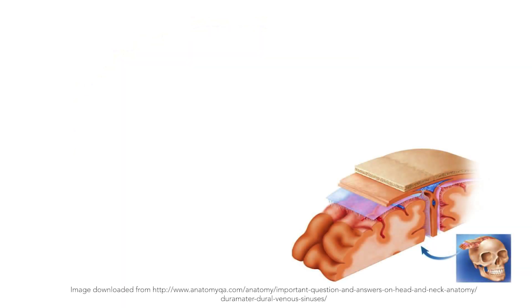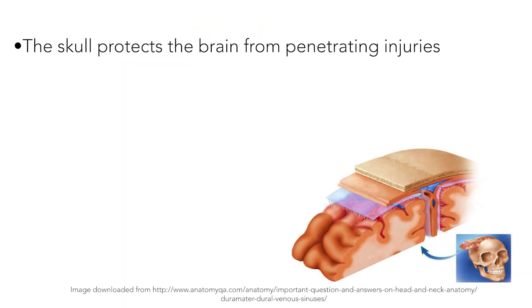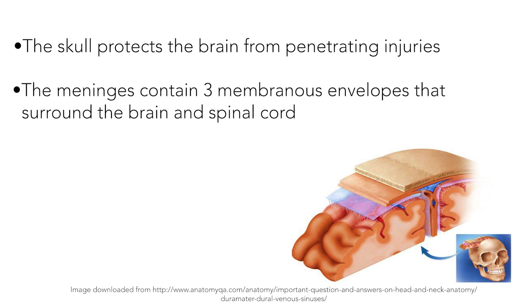The skull does a very important job not only holding our brain in place but also protecting the brain from penetrating injuries. Additionally, the brain is enveloped in protective tissue known as meninges. These are further divided into three layers — the pia, the arachnoid, and the dura — each with their own function.